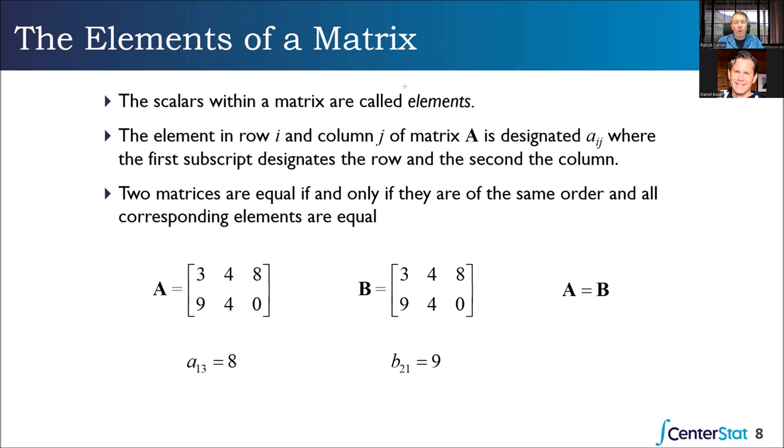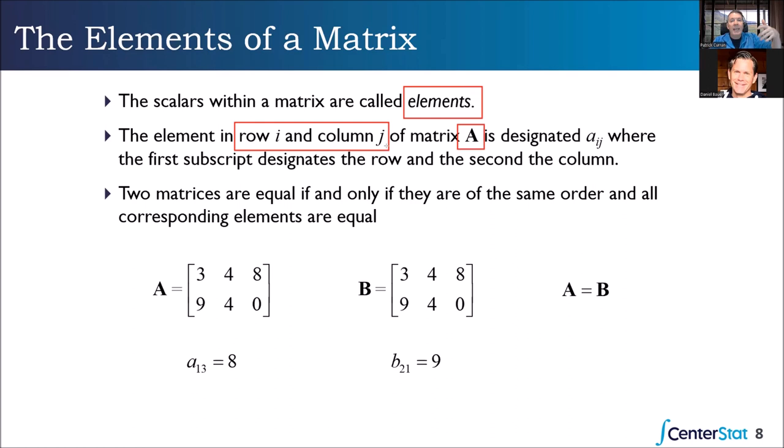A matrix is a doubly ordered arrangement of scalars — made up of what we call elements. We're going to call a number a scalar, and then call a number that's within a matrix an element. For matrix A, if we want the one-three element, we go to the first row and the third column, and that's eight — a_sub_1,3 equals eight. For matrix B, the two-one element is the second row, first column, which is nine.